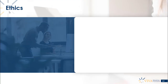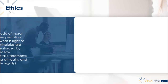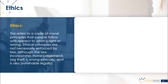Let's move on now to ethics. What is ethics? This refers to a code of moral principles that people follow with respect to what is right or wrong. Ethical principles are not necessarily enforced by law, although the law incorporates moral or ethical judgments. Theft, for example, is obviously wrong ethically and also punishable legally.